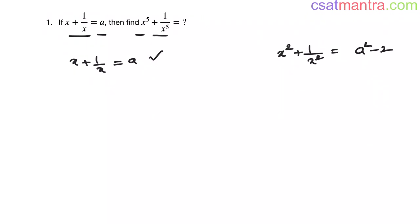For this value to be positive — since x square is positive and 1 by x square is positive, squares are always positive — so this total value is positive. Therefore, for x square plus 1 by x square to be positive, a should be greater than or equal to root 2. We have seen this in our lecture.